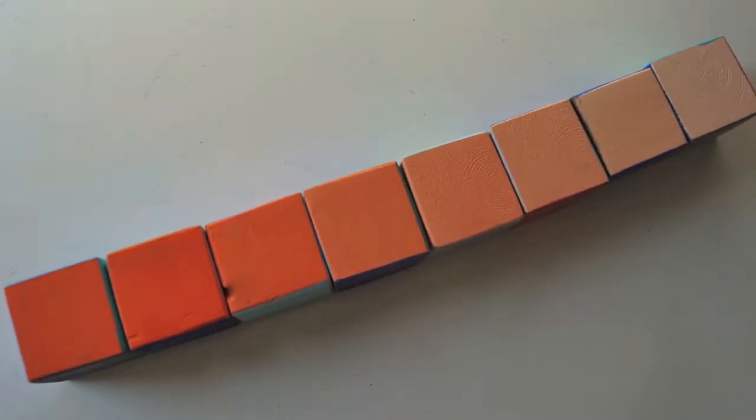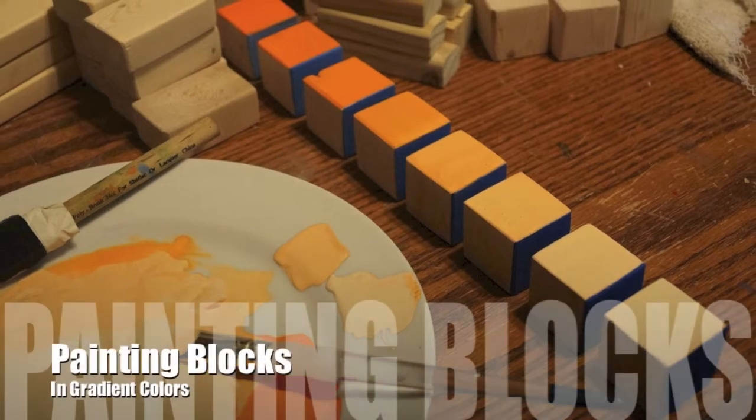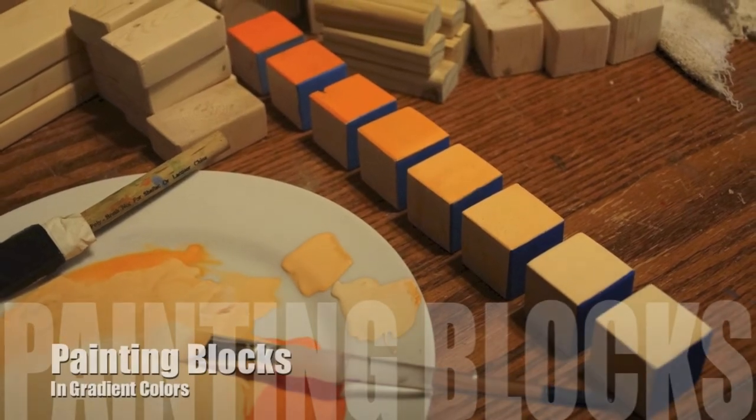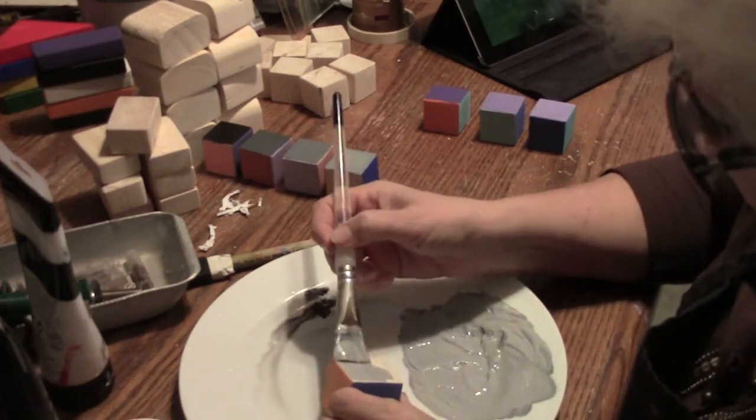Now I will show you how to get those different values. Choose your six colors and also have white paint to change the values. We will work with one color at a time painting on one side of each block.